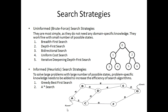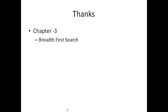We are going to discuss these two search strategies in further video lectures, so it is recommended to watch them properly. To summarize: we have two kinds of search strategies — uninformed search, where the agent has no domain knowledge and blindly follows a path, and informed search, where the agent uses specific heuristics to intelligently follow a path based on cost. In the next video, chapter three, we will discuss the uninformed search strategy breadth first search. Please like and subscribe. Thank you.